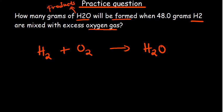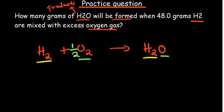Before performing any calculations we need to balance this equation. Comparing hydrogen: we have two hydrogen atoms on the left and two on the right — that's fine. For oxygen: we have two on the left and one on the right. We could put one-half as a coefficient, giving a balanced equation, but we don't want to use fractions.